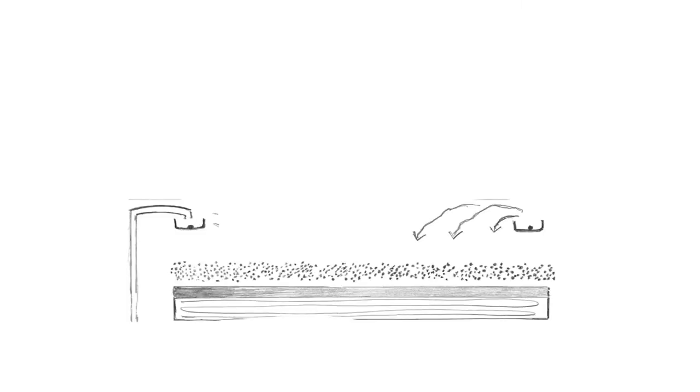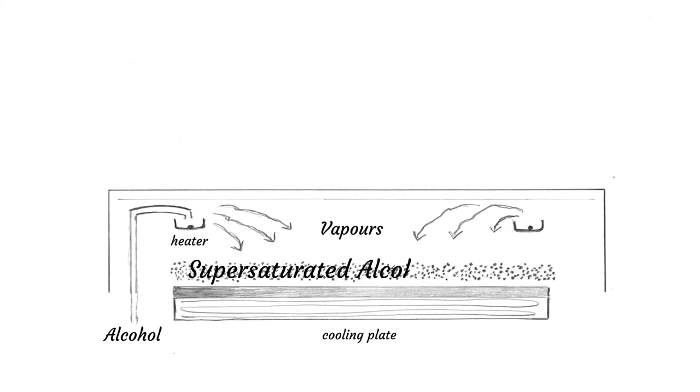On the top there is a heater heating up the alcohol to around 50 degrees Celsius so that it evaporates. Then there is a cold plate on the bottom to cool the vapor to around minus 30 degrees Celsius. The cooling condenses the vapor to create a layer of supersaturated alcohol.